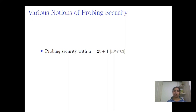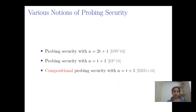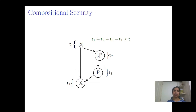As per Ishai, Sahai, and Wagner's work, to achieve T-th order security we want the number of shares to be 2T+1. Further, this bound is optimized to n equals T+1 in the CHES 2010 work by Rivain and Prouff. We also have the notion of compositional security, where the bound remains n equals T+1, introduced by Barthe et al. in CCS 2016. As per this notion, if we prove individual gadgets to be SNI secure, we can say the overall implementation is SNI secure — which is compositional security.